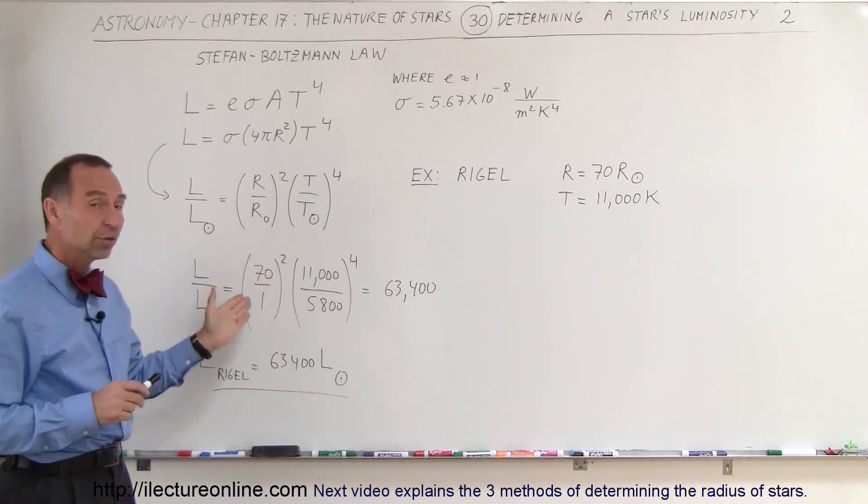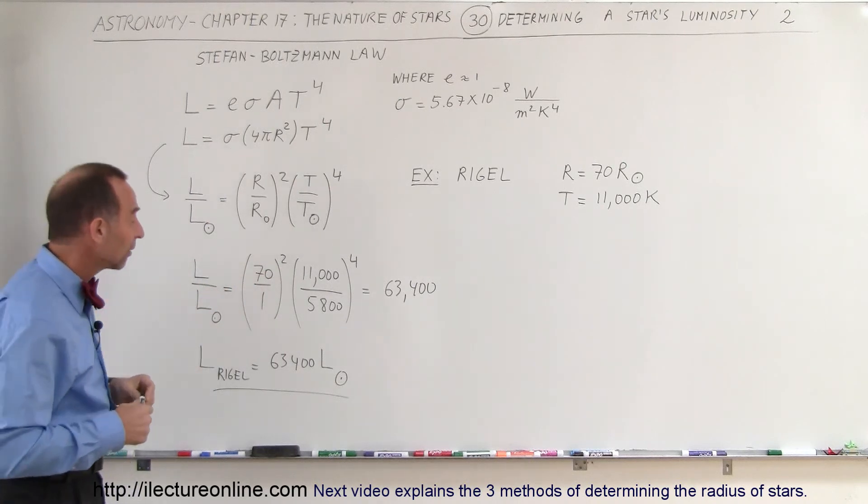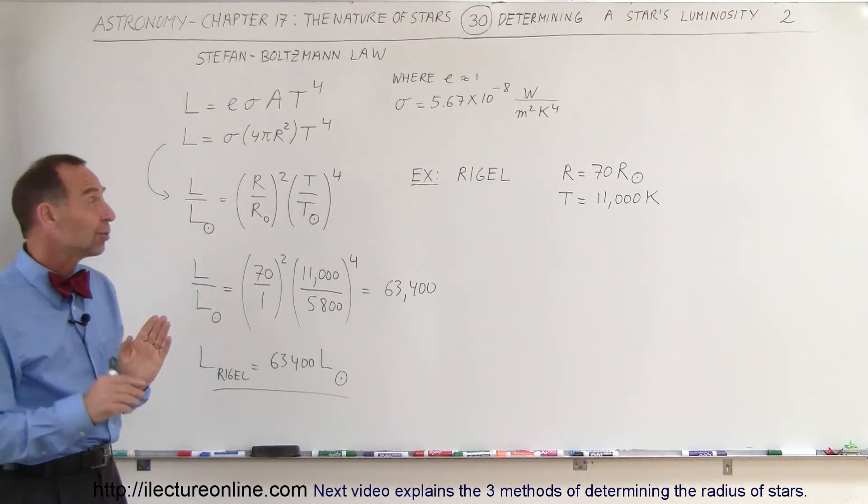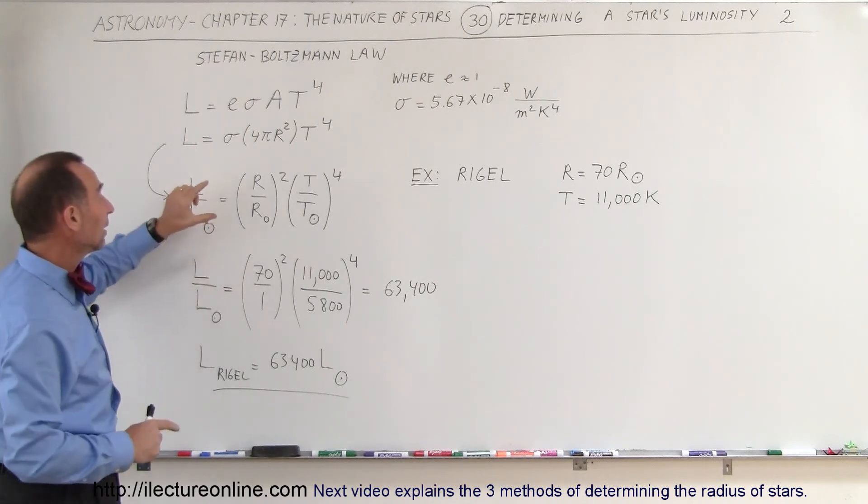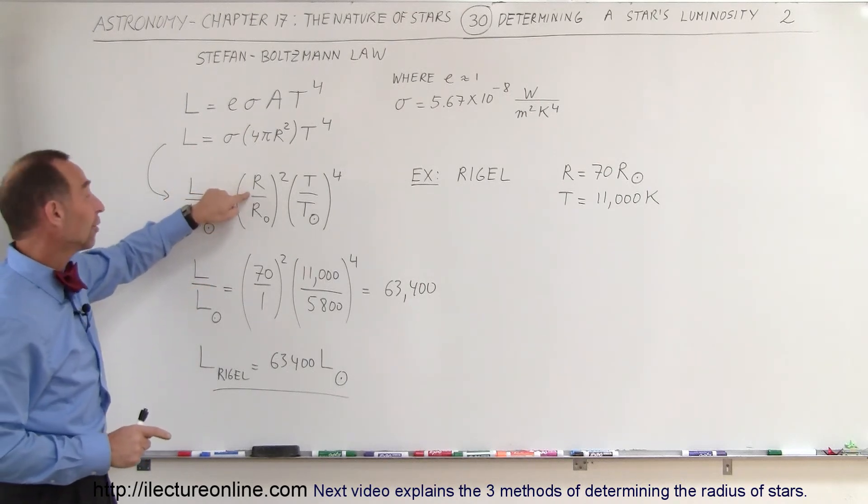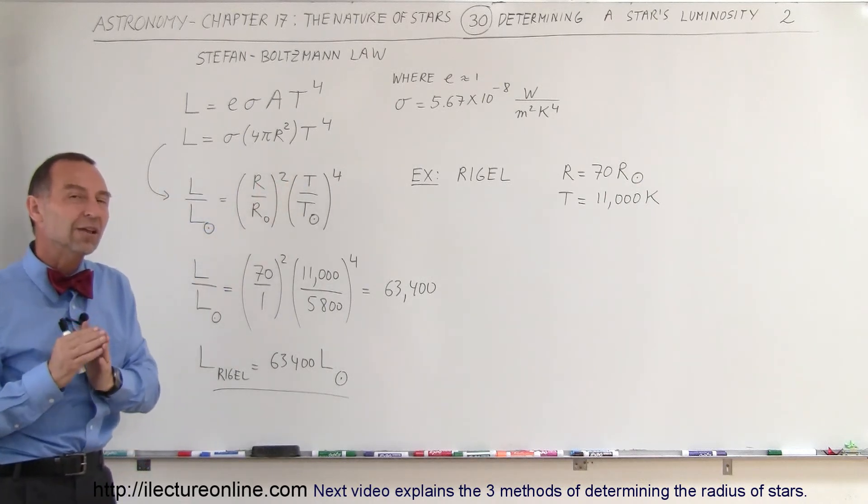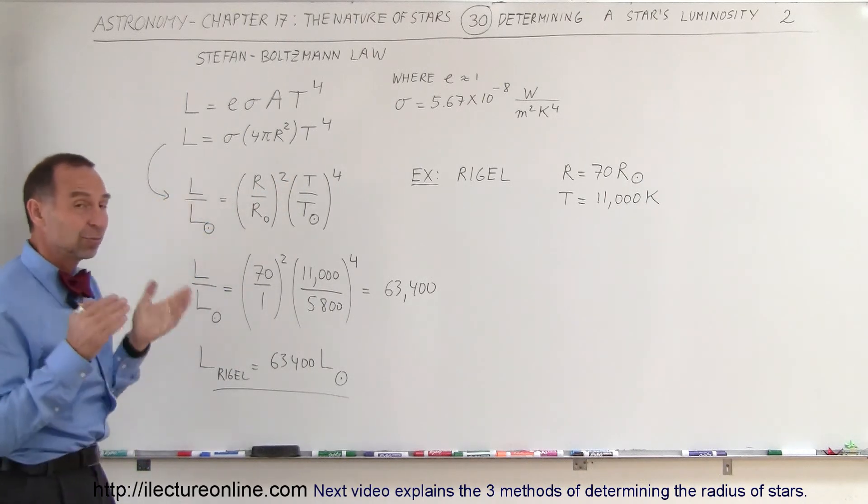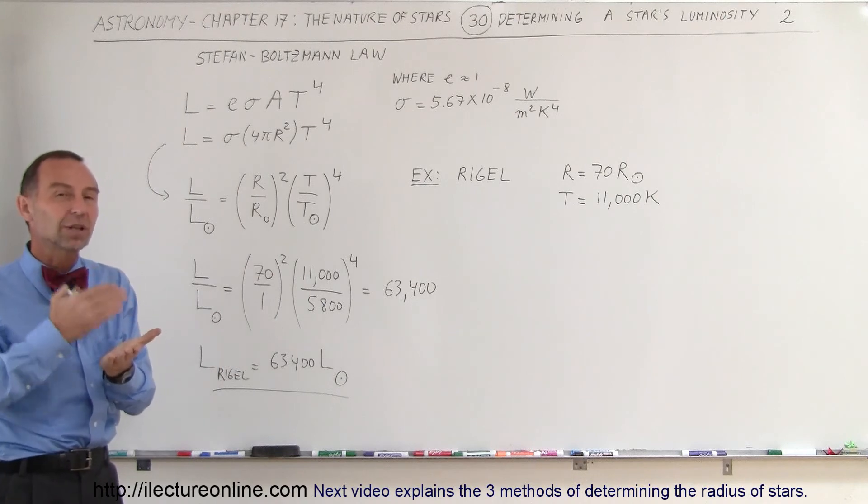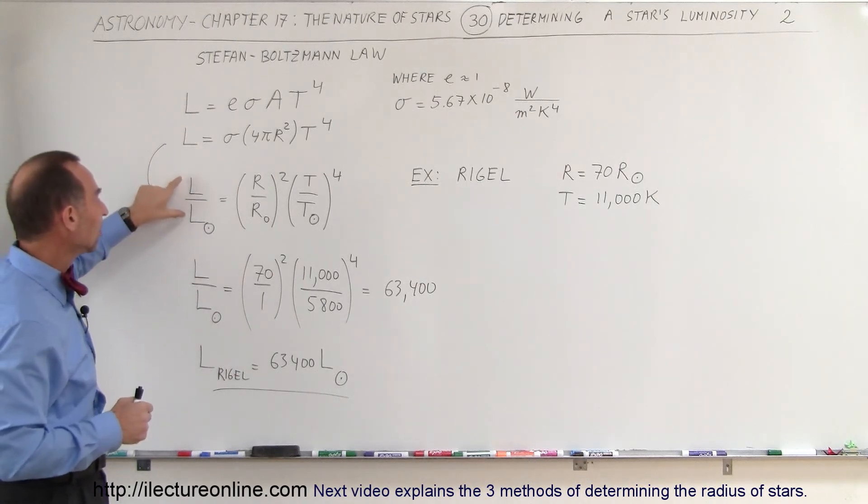But anyway, if we can get both, then we can figure out the luminosity. Sometimes we can actually use this equation to figure out the radius of a star by knowing the luminosity and the temperature. There are other ways in which we can find the luminosity, especially using the mass-luminosity relationship.